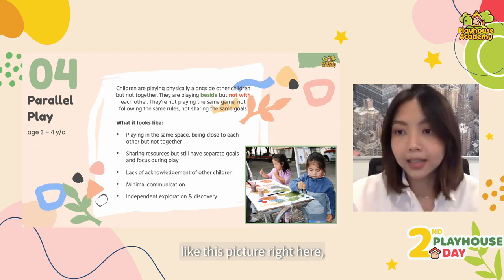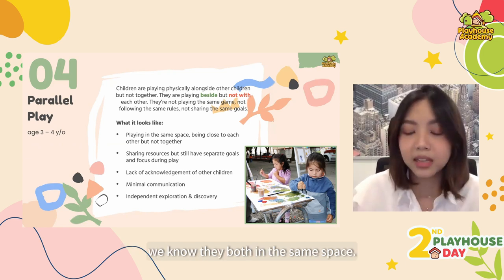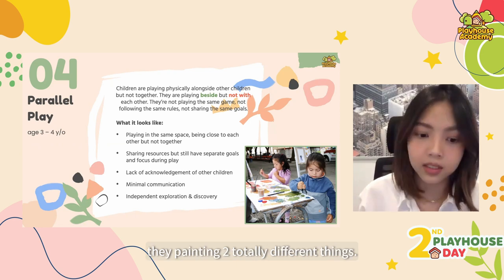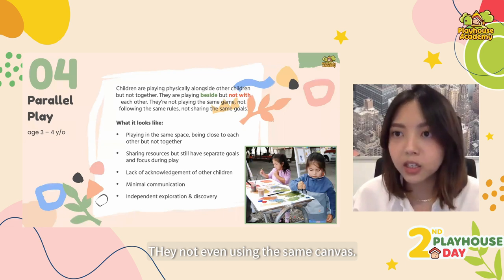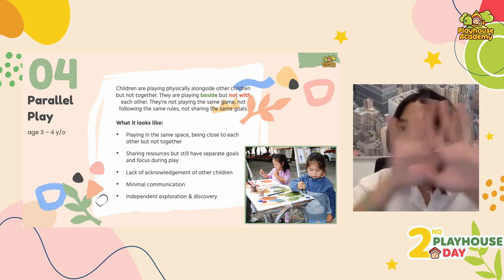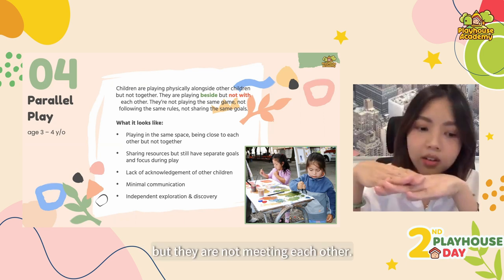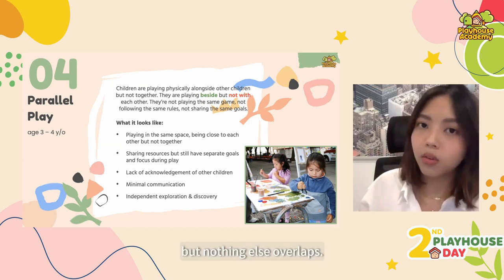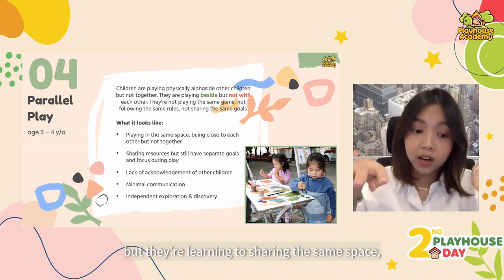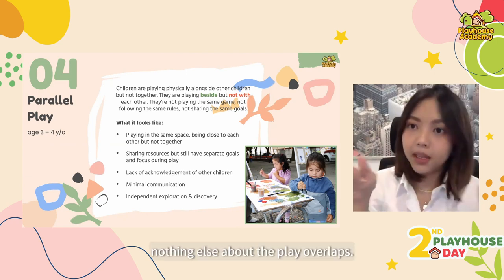For example, like this picture right here — we see two children sitting at the same table, sharing the same paint set and brushes. They're both in the same space right next to each other and they're both painting. But when you look closely, they're painting two totally different things — they're not even using the same canvas. They're doing two separate things, just being close to one another. So instead of working on one artwork together, each one is doing it separately. Just like the name, the play happens parallel to one another but they're not meeting each other. They're using the same things, but nothing else overlaps. One child is doing A, one child is doing B, and their exploration is independent. But they are learning to share the space, share the same resources, and learning how to be amongst peers.